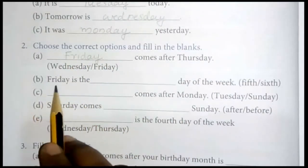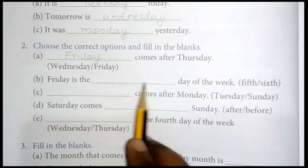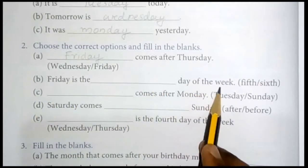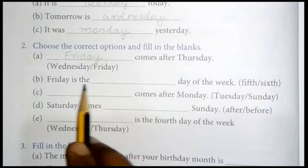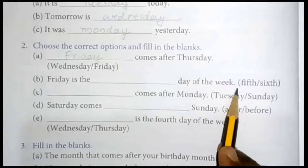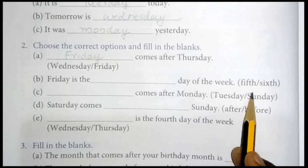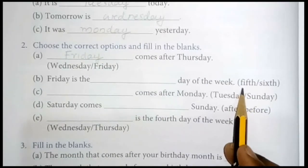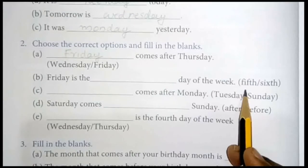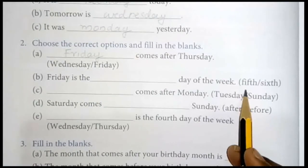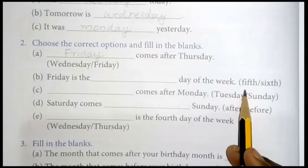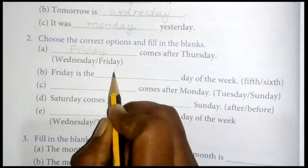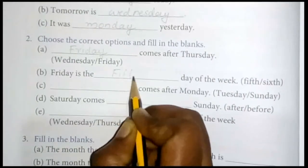Next: Friday is the dash day of the week. Count it: Monday is first, Tuesday second, Wednesday third, Thursday fourth, Friday fifth. So write here: fifth.